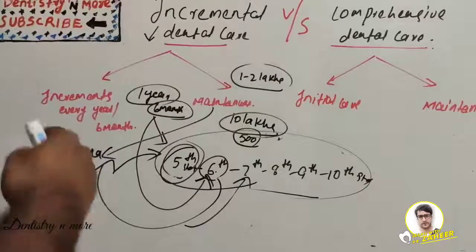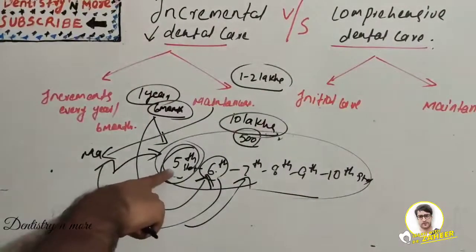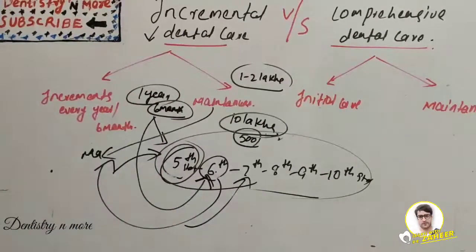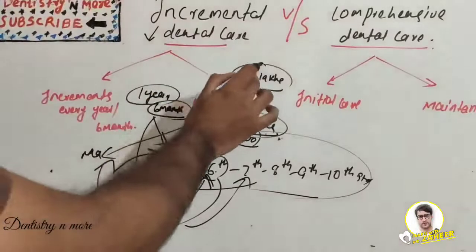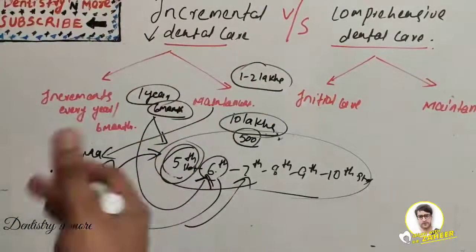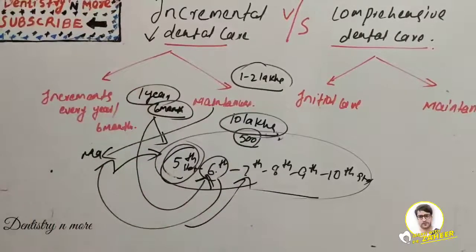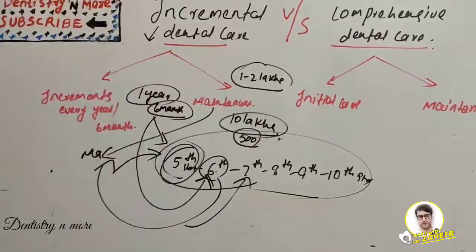The key principle is: we provide treatment to the earliest class — the fifth standard — and the same group receives maintenance care in successive years. After five or six years the entire school will be covered. This is the concept of incremental dental care, used when we don't have enough funds or enough workforce — in any scenario where we cannot provide treatment all at once, we go with an incremental pattern.